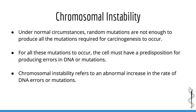This leads us to the principle of chromosomal instability. Under normal circumstances, random mutations are not enough to produce all of the mutations required for carcinogenesis. For all of these mutations to occur, the cell must have a predisposition for making errors in DNA. Chromosomal instability refers to an abnormal increase in the rate of DNA errors or mutations, and is believed to be involved in most cancers, occurring as a result of defective DNA repair mechanisms.